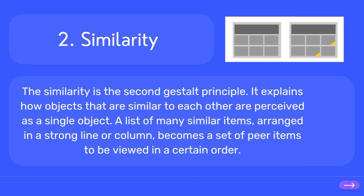Similarity is the second Gestalt principle. It explains how objects that are similar to each other are perceived as a single object. A list of many similar items, arranged in a strong line or column, becomes a set of pure items to be viewed in a certain order.